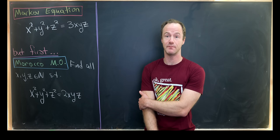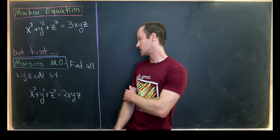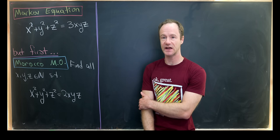The Markov equation is this equation: x² + y² + z² = 3xyz. But before we do that,